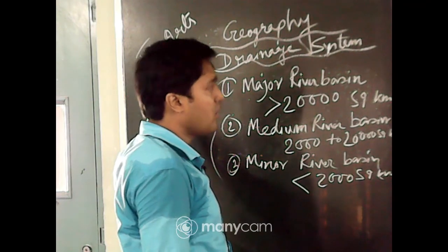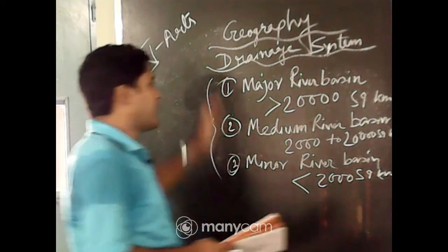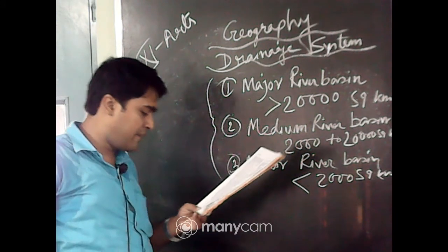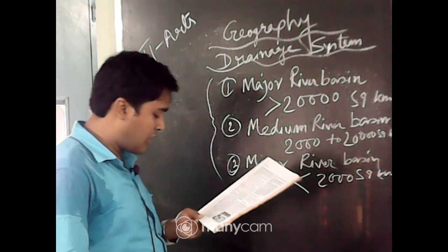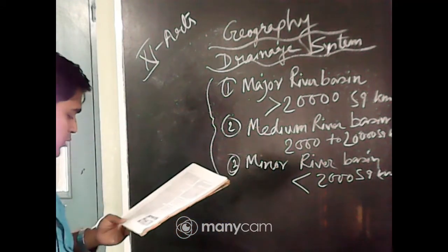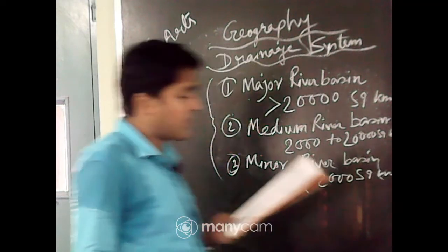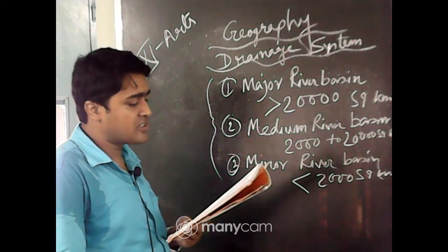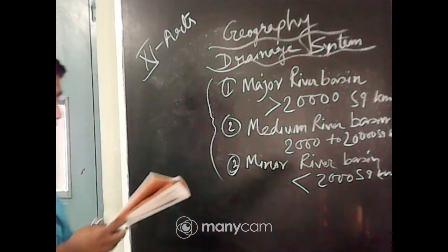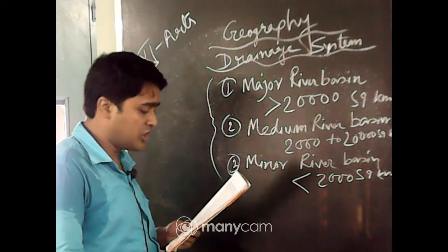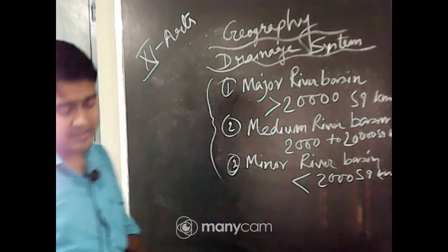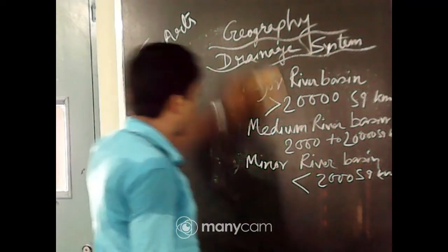So rivers on the basis of size of watershed have three parts: major, medium and minor river basin. Now look at figure 3.1 — you can see many rivers whose sources are in the Himalayas and which discharge water into either the Bay of Bengal or Arabian Sea. The Narmada and Tapi are two large rivers which are exceptions — they discharge their water into the Arabian Sea. On the basis of mode of origin, rivers are two types. On the basis of size, three types. On the basis of discharge, two types.